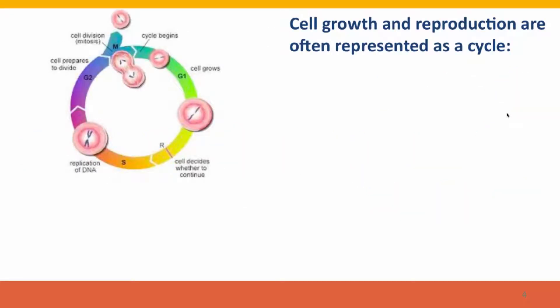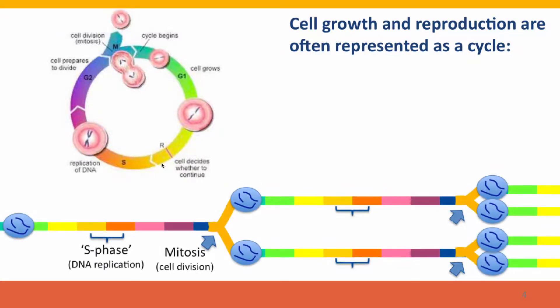This is often represented as a cycle, as shown here, which is convenient and compact. But of course, in reality, this is a process occurring through time with the same events occurring again and again, producing more and more cells.